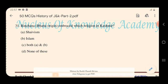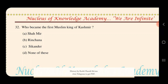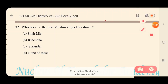Question 32: Who became the first Muslim king of Kashmir? Options: A) Shahmeer, B) Rinchan, C) Sikandar, D) None of these. The right answer is B — Rinchan was the first Muslim king of Kashmir.